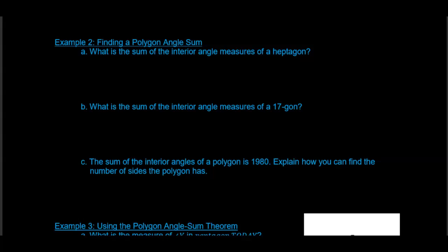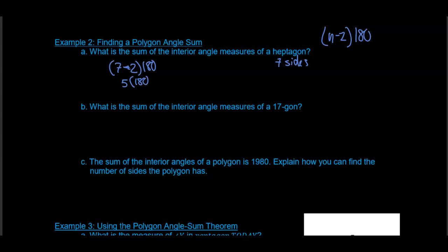How can we use that theorem? So what is the sum of the interior angle measures of a heptagon? The formula is (n minus 2) times 180, and a heptagon has seven sides. So this would be (7 minus 2) times 180, which is 5 times 180, and 5 times 180 is 900 degrees.